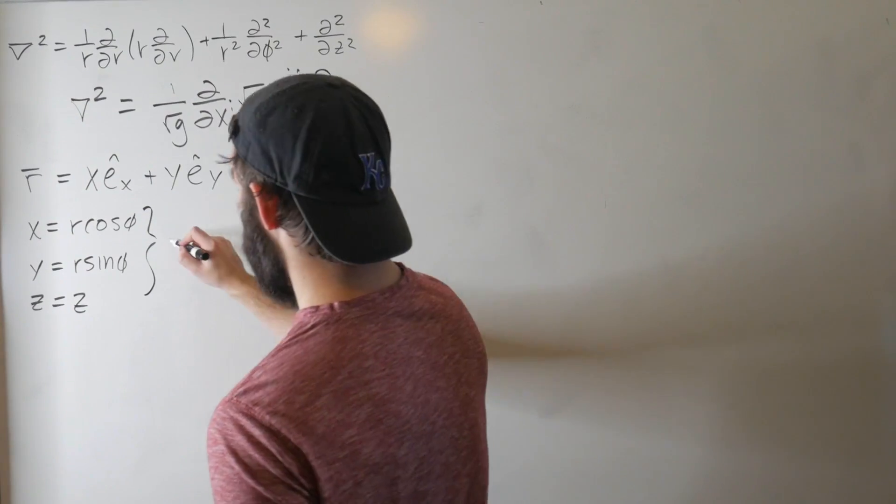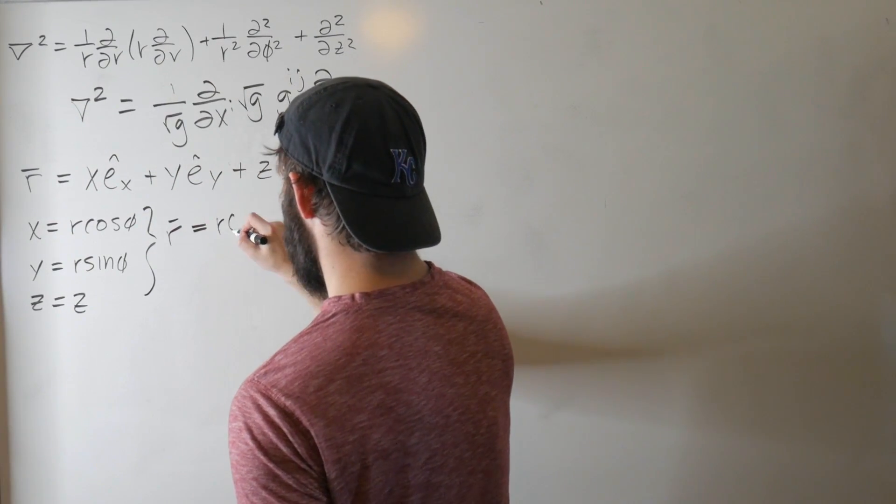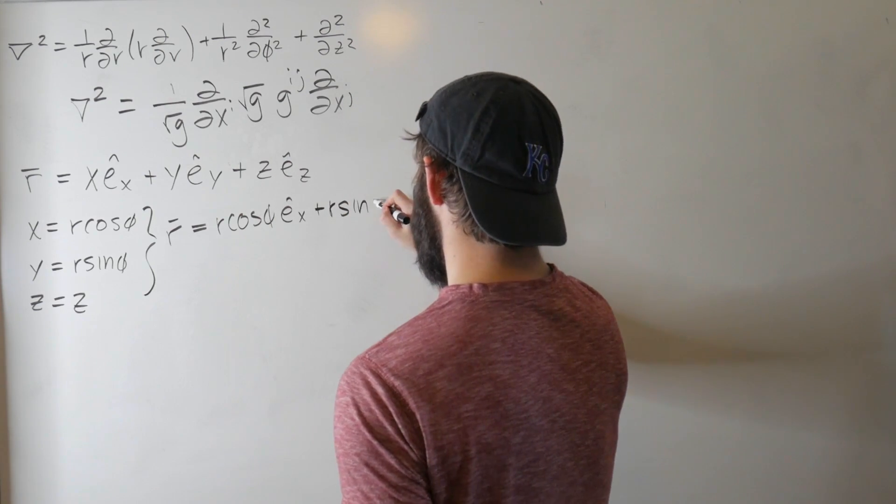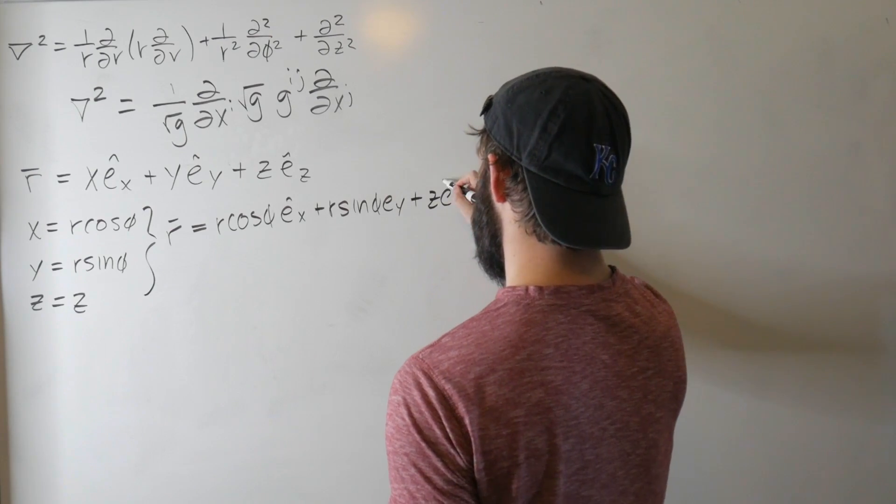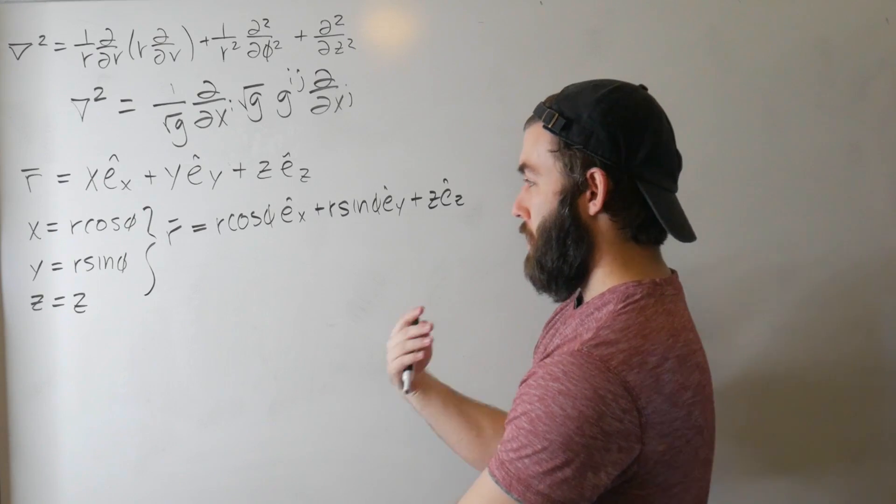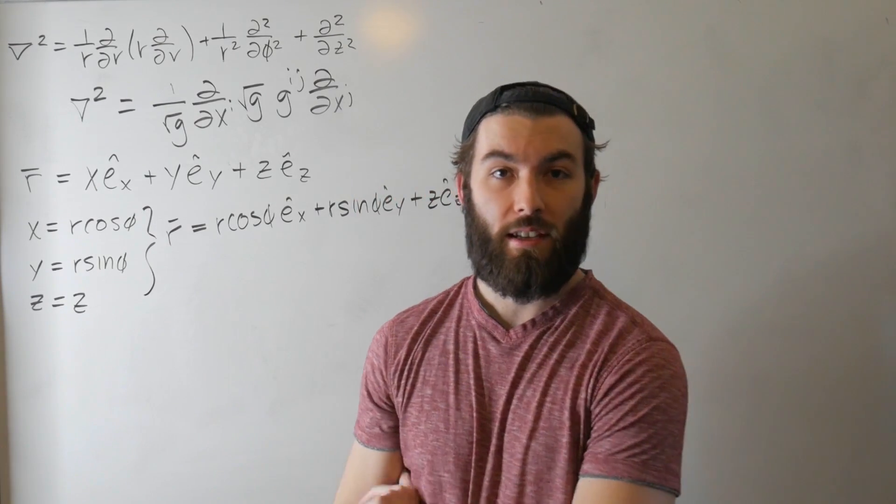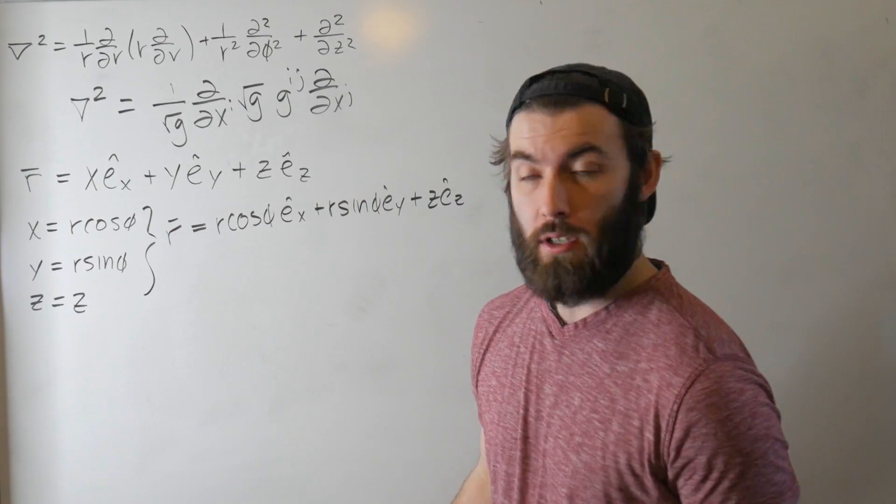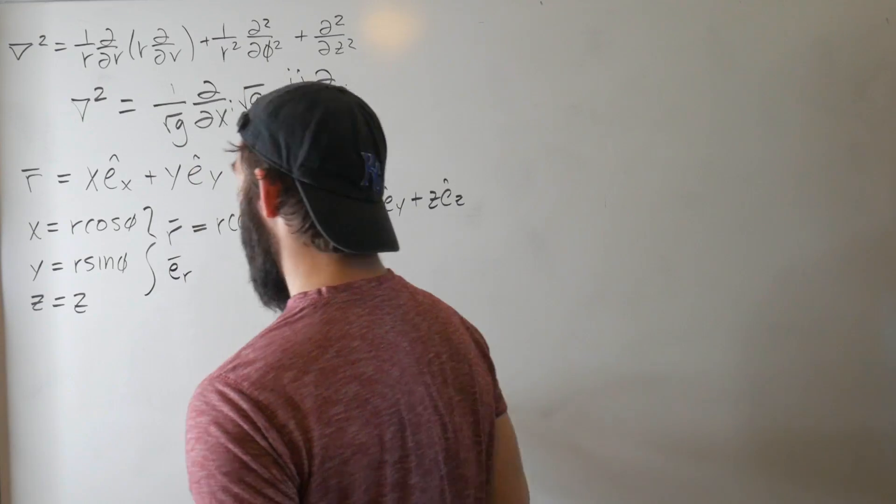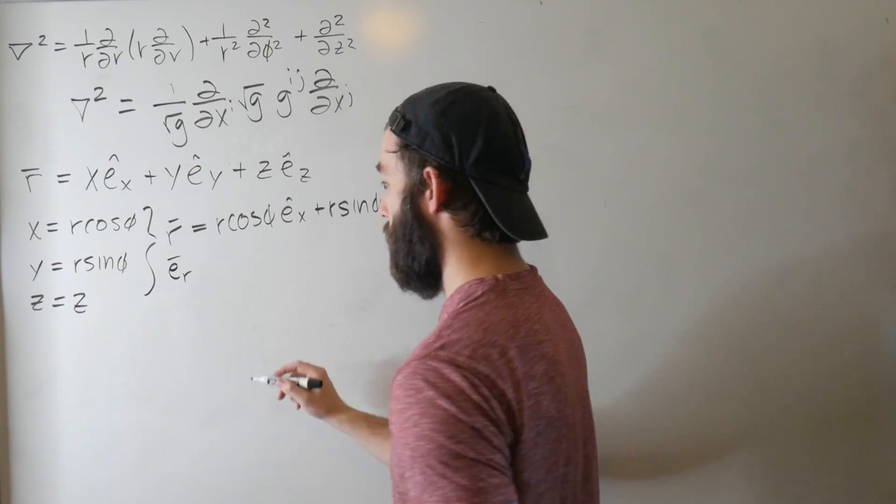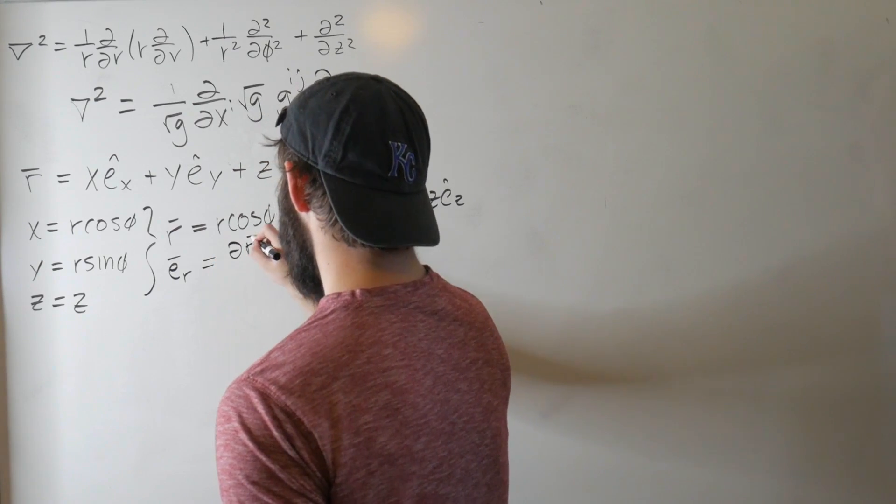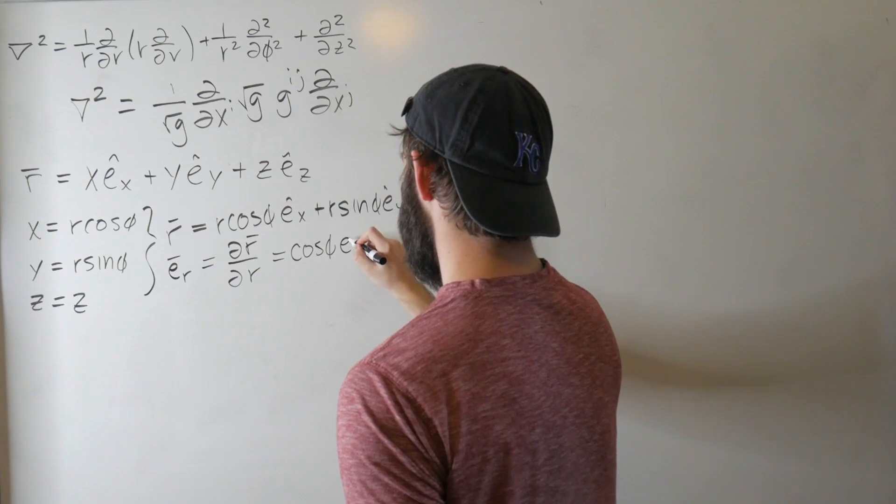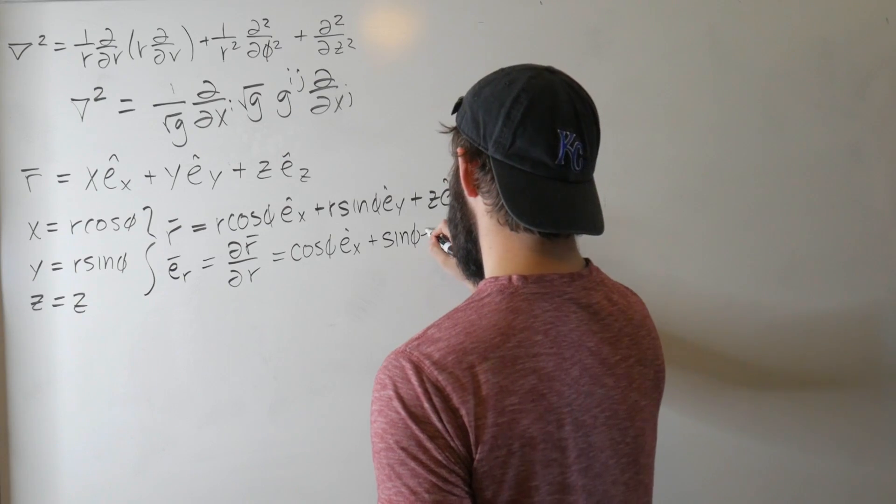Substitute this into our position vector, and we get that r equals r cosine phi e_x plus r sine phi e_y plus z e_z. Now we want to define our basis vectors in cylindrical coordinates, and all you do to find those is we take the derivatives of this position vector with respect to those different coordinates. So if we want to find e_r unnormalized, so we're not worrying about normalization in this derivation, this is just going to be dr/dr, which is equal to cosine phi e_x plus sine phi e_y.